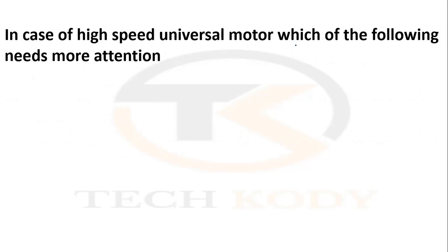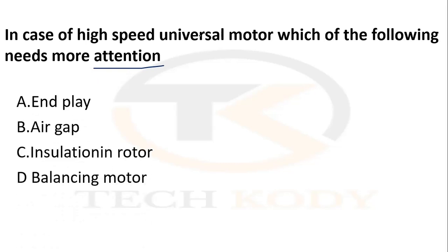In the case of a high-speed universal motor, which of the following needs more attention? The options are: in-play, air play, insulation, or balancing. Here they ask for high-speed motor — check the keywords while reading the question, and read twice to understand what is being asked. The answer is balancing — by balancing you ensure the high-speed universal motor operates correctly.